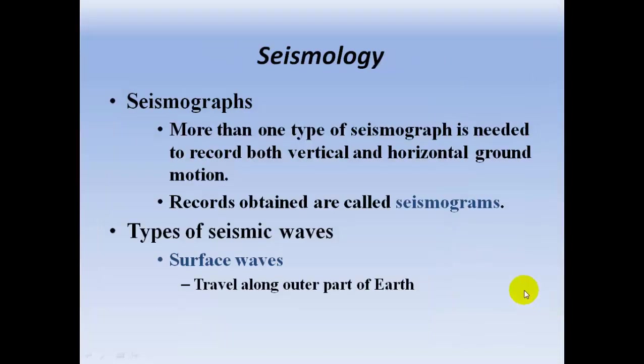More than one type of seismograph is needed to record both vertical and horizontal ground motion. Records that are obtained are called seismograms. The seismogram is to the seismograph as a telegram is to a telegraph — the seismogram is the record, and the seismograph is the machine.